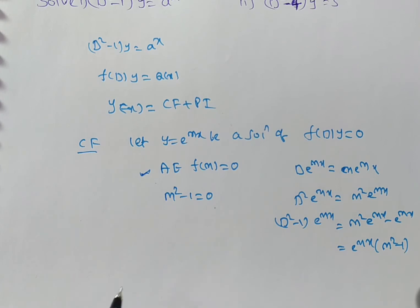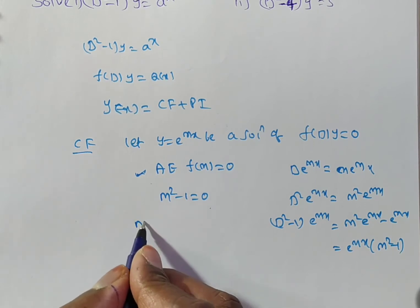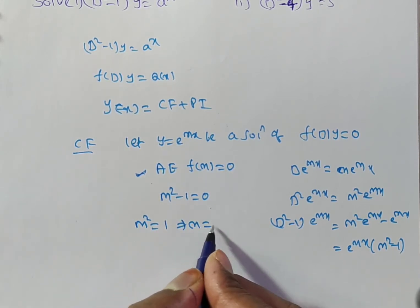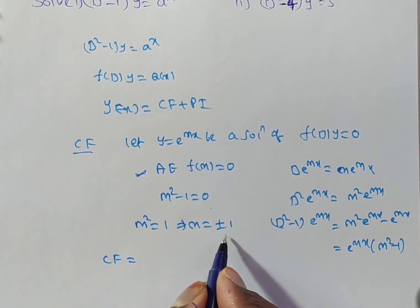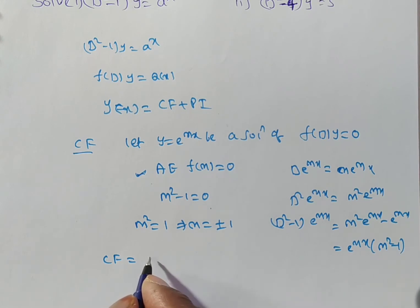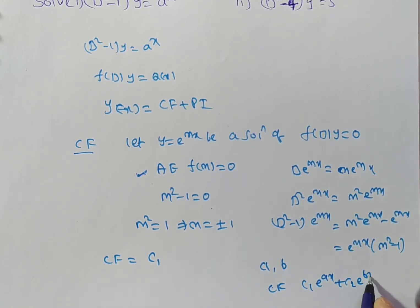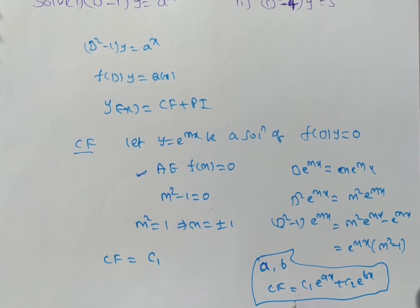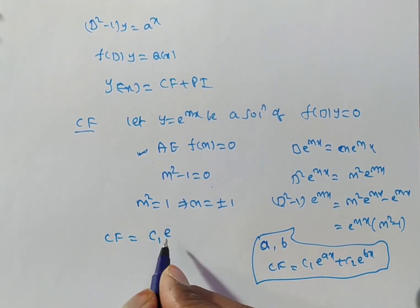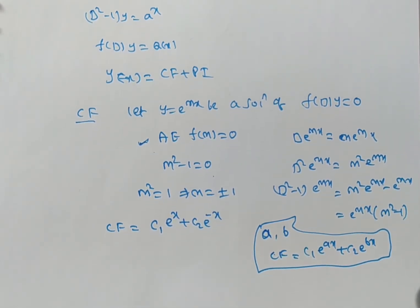To get the complementary function, substituting y = e^(mx) gives m² = 1, so m = ±1. The roots are real and distinct. Whenever roots are a and b, we write the CF as c₁e^(ax) + c₂e^(bx). So here the complementary function is c₁e^(x) + c₂e^(-x).